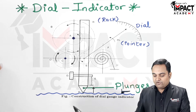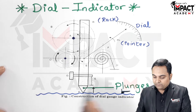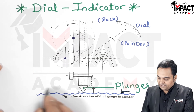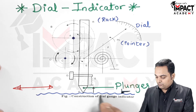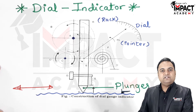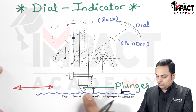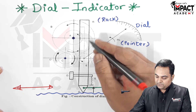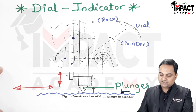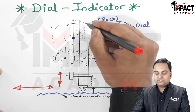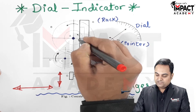Now, how the functioning takes place: first, we move the dial indicator horizontally along the surface whose roughness or flatness has to be checked. As we move it along the waviness of the surface, the plunger reciprocates in the upward or downward direction.